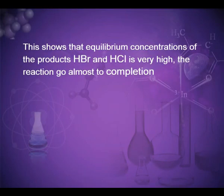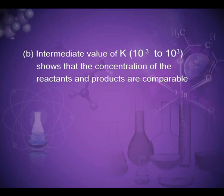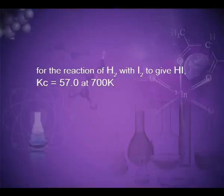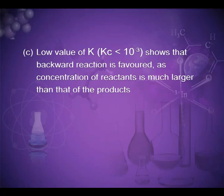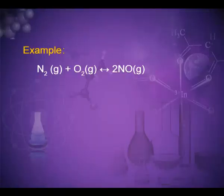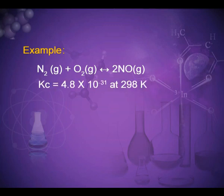This shows that equilibrium concentration of the products HBr and HCl is very high, and the reaction goes almost to completion. The second case is an intermediate value of K between 10⁻³ to 10³, which shows that the concentration of the reactants and products are comparable. For example, for H₂ + I₂ → 2HI, Kc is 57.0 at 700 K. Third: a low value of K where Kc is less than 10⁻³ shows that backward reaction is favored. For example, N₂ + O₂ → 2NO has Kc = 4.8 × 10⁻³¹ at 298 K.